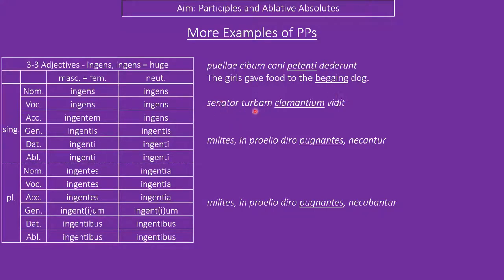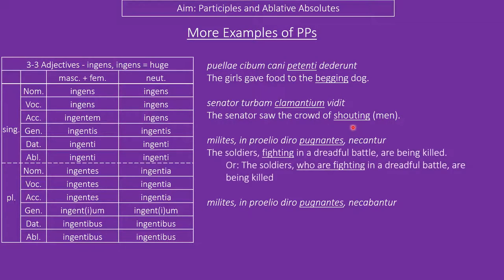The senator saw the turbam clamantium. This is an interesting example because clamantium is clearly genitive plural — just because they have an -m at the end doesn't mean they agree. There's nothing to describe clamantium, so it is a nominalised adjective: the senator saw the crowd of shouting men. The soldiers pugnantes are killed fighting in a dreadful battle — we could rewrite this as 'the soldiers who are fighting in a dreadful battle are being killed.' We can rewrite this present participle and it will still make sense.